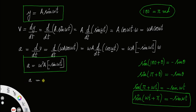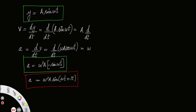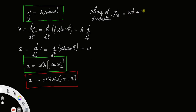Our acceleration expression now becomes: a = ω²A sin(ωt + π). This is the new expression for acceleration. You can compare the phase of displacement with the phase of acceleration. Whatever appears inside the trigonometric function represents the phase of that function. So, the phase of acceleration φ_a = ωt + π.